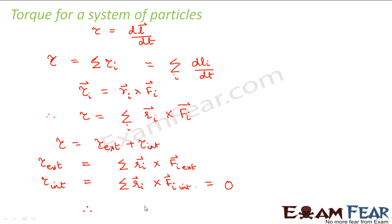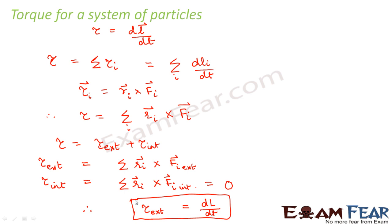Therefore, torque external will be equal to dL by dt. So for a system of N particles, the total external torque acting on the system is equal to d by dt of the total angular momentum of the system. Looking at these equations together: torque equals summation of dLi by dt, and since torque internal is zero, torque equals torque external. Substituting, torque external equals summation of dLi, which is nothing but dL divided by dt. That is how we get torque external is equal to dL by dt.